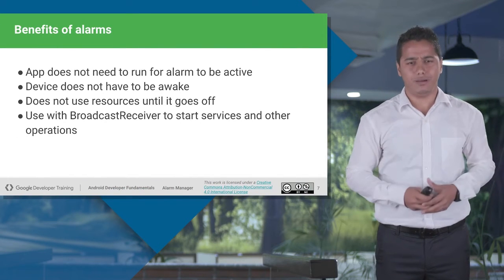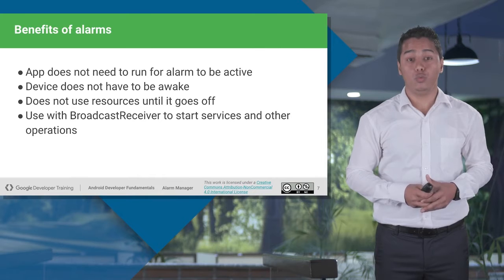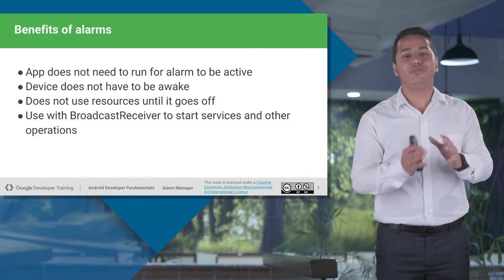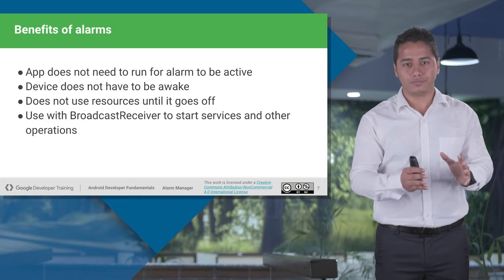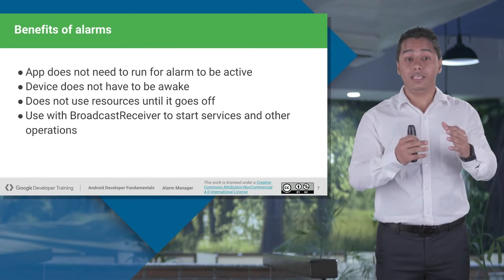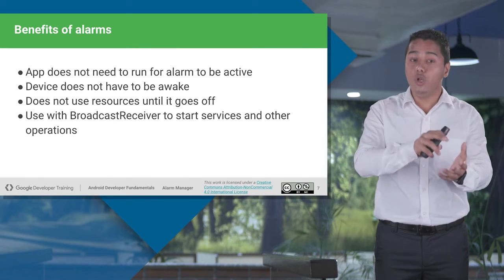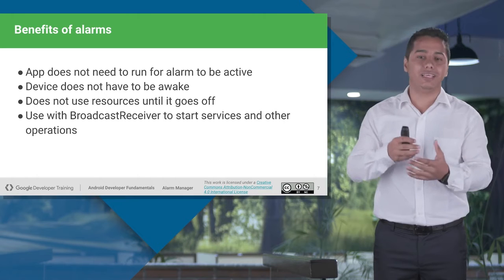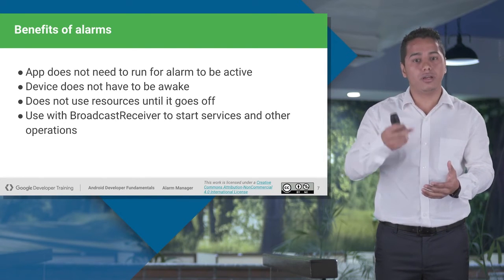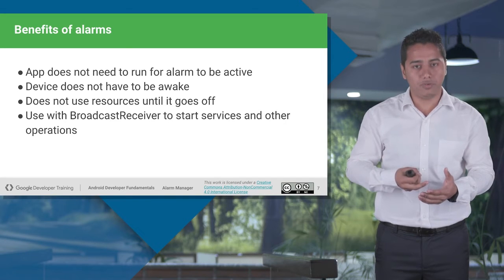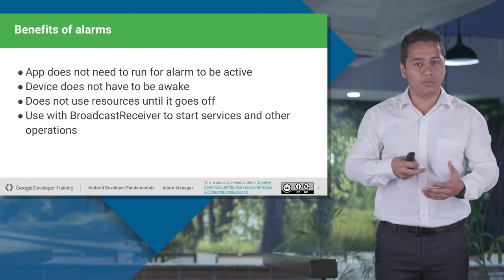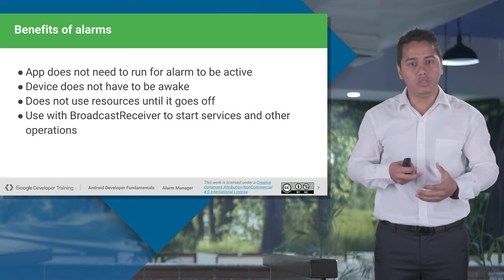So what are the benefits of alarms? First one, which we just discussed, is that the alarm will be active even if your application is destroyed. You just have to configure it once and then they will be active in the background. Also, the alarm will not use the resources until and unless it goes off. Let's say you have created an alarm which has to trigger itself after every 15 minutes — it won't use the resources for those 15 minutes. As soon as the alarm triggers, it will use resources then.